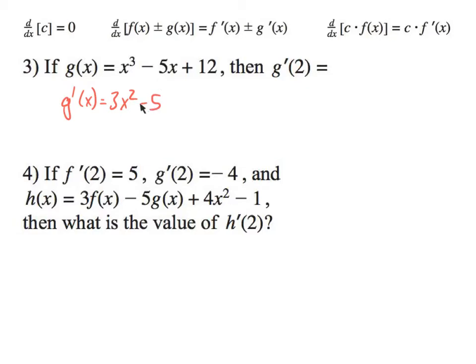You could put a 1 here and do the whole process if you want. And then a constant according to the rule is 0, because this is a flat line at 12 and the slope of that is 0.